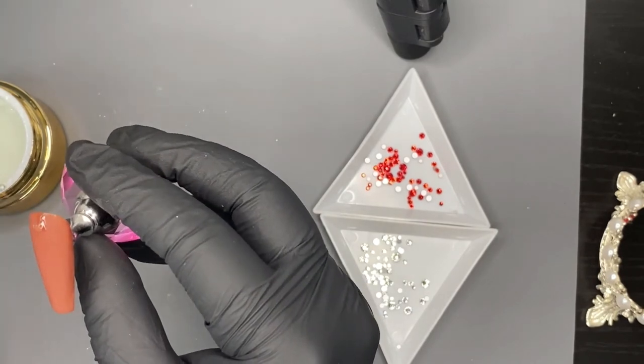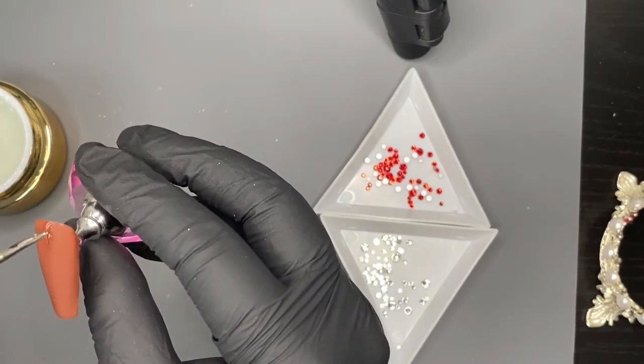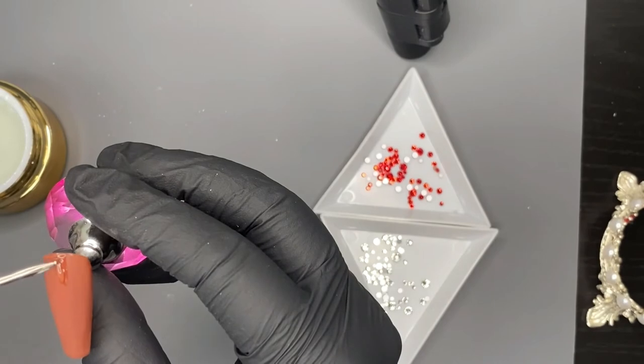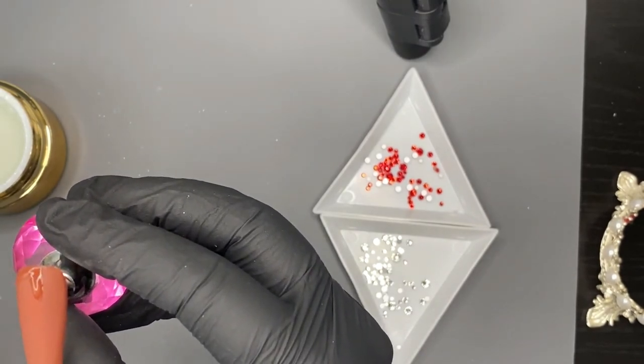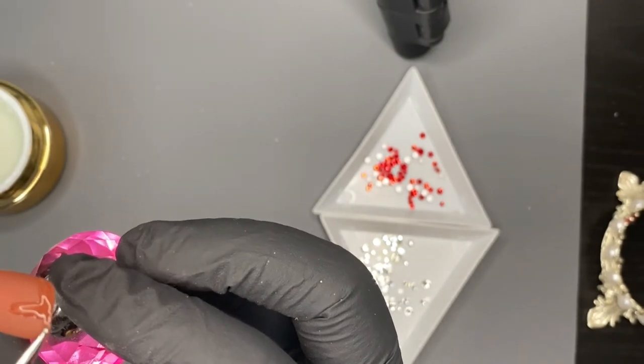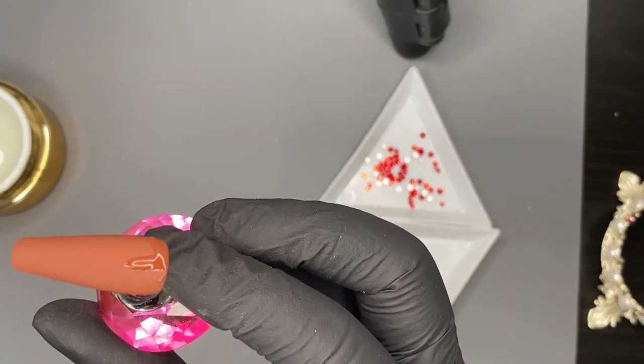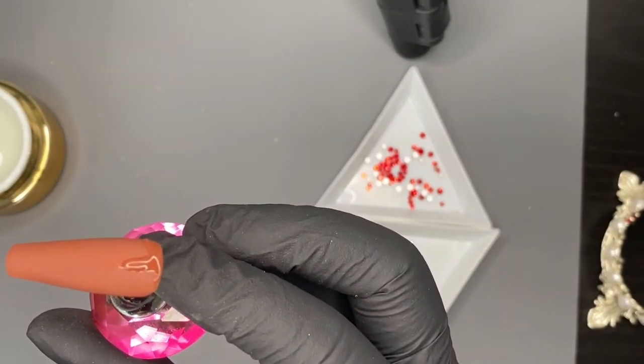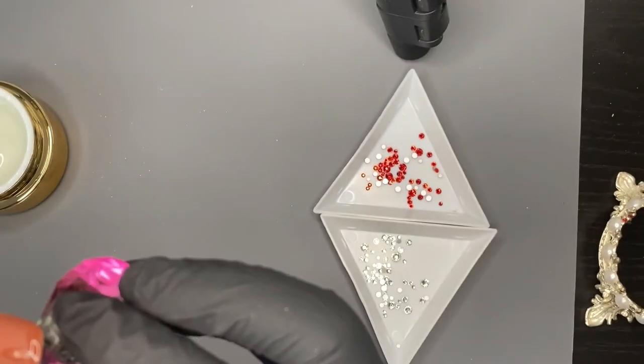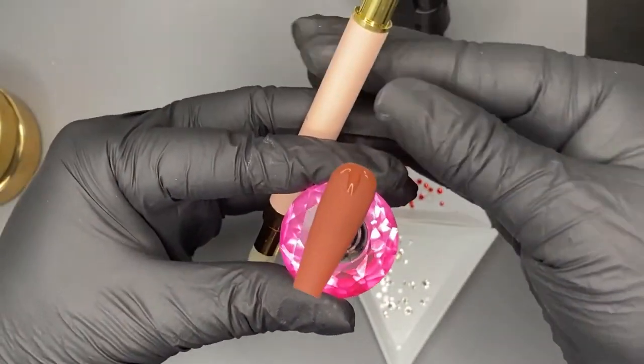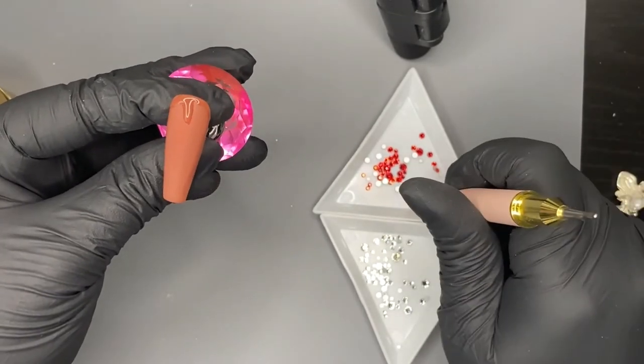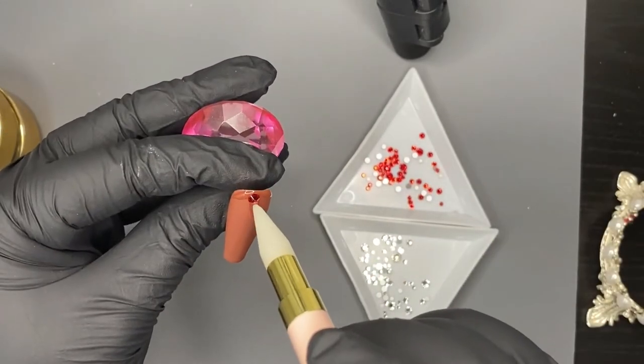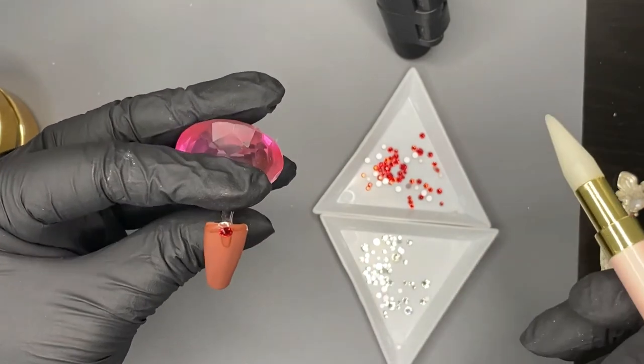So then we're on to the thumb. For the thumb I was doing a bit of a cuticle design, so we're going to put on a little bit more of that gem glue and just have it go around the cuticle right there, just around that cuticle.